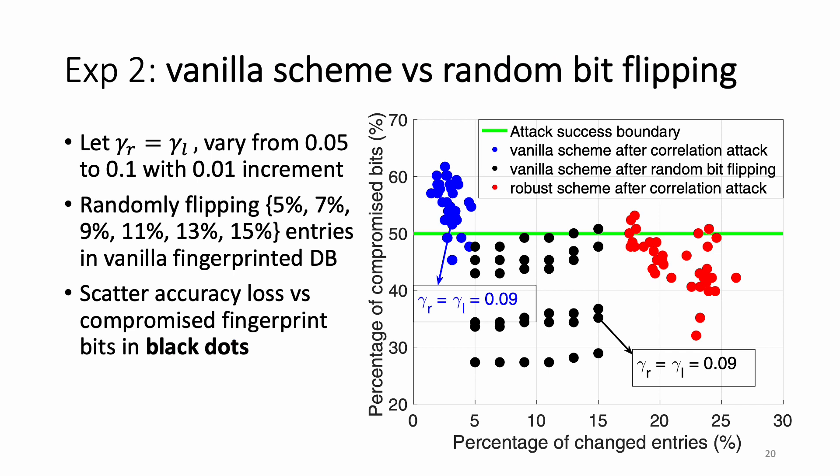In the second experiment, we subject the vanilla fingerprinted database to the random bit flipping attack. We vary gamma-R and gamma-L together from 5% to 10% with 1% increment. After inserting the vanilla fingerprint, we randomly flip 5%, 7%, up to 15% of entries in the vanilla fingerprinted databases. We scatter the accuracy loss versus the compromised fingerprint bits in black dots in the figure on the right. Clearly, if the attacker uses the random bit flipping attack, for most cases it cannot compromise more than half of the fingerprint bits, which suggests that correlation attacks are much more powerful than the random bit flipping attack.